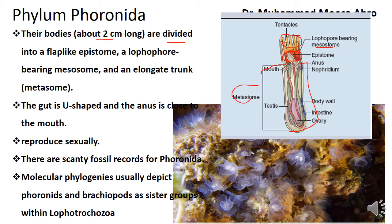It has a complete gut. In the mouth region, this is the mouth, and it has an anus. Their positions are almost the same. The gut is U-shaped.